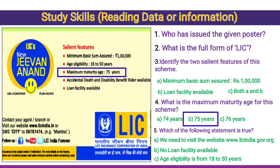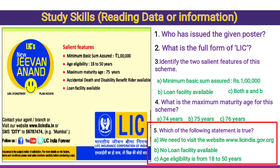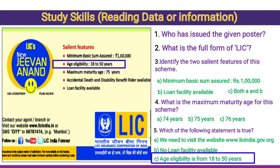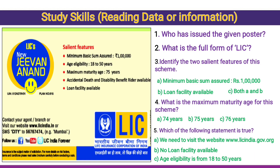Write both the answer and the option. Fifth question: which of the following statements is true? One option gives the website as www.licindia.gov.org — but the poster shows gov.in, so that is wrong. 'No loan facility available' — also wrong. 'Age eligibility is from 18 to 50 years' — yes, absolutely, option C is the right answer.